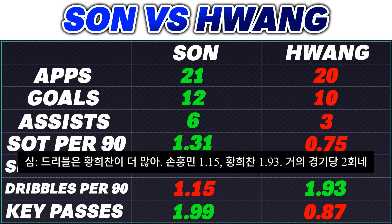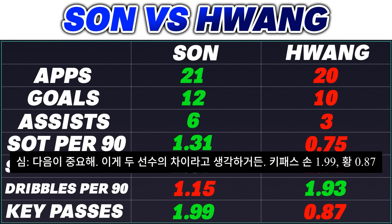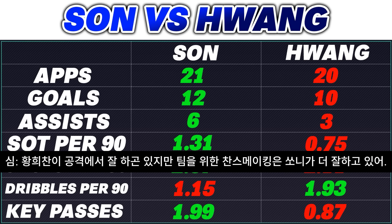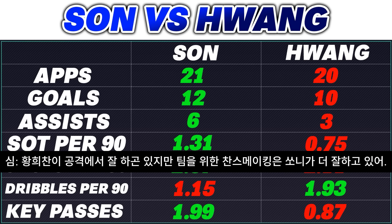Dribbles per 90: Hwang definitely makes a lot more dribbles than Son does — 1.93, nearly two per game, compared to Son's 1.15. But this is the key difference in the quality of the two players: key passes per game, 1.99 to 0.87. So as much as Hwang has been very effective in the forward line, when it comes to creating chances and helping the team out, Son clearly looks like he's ahead of the game.